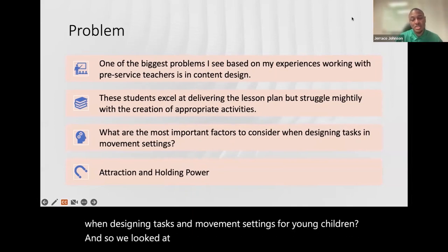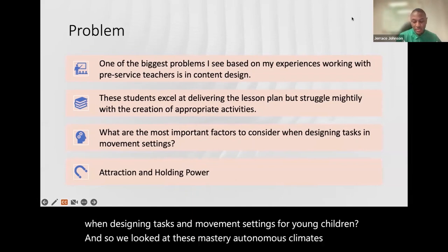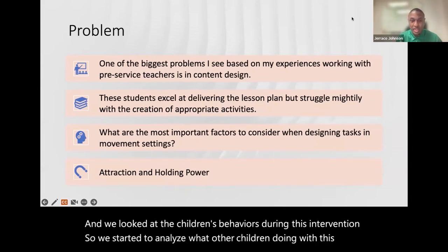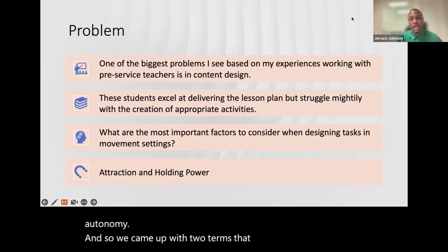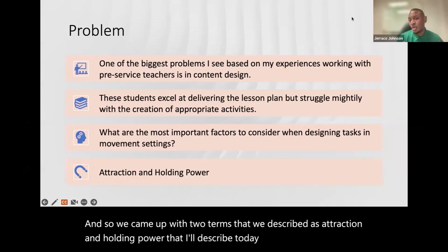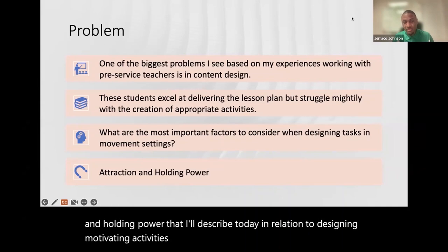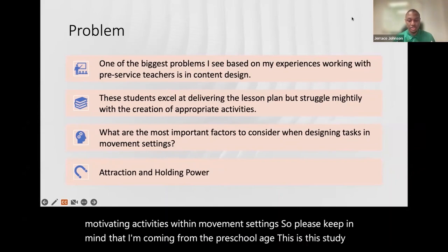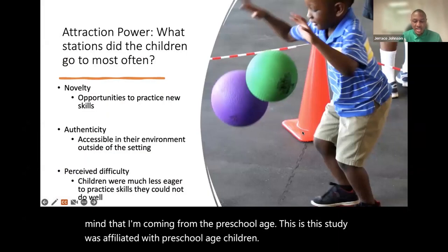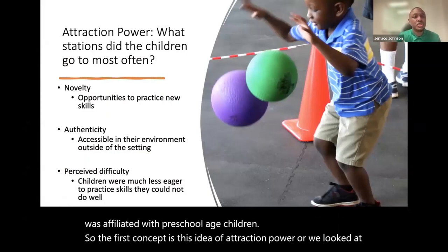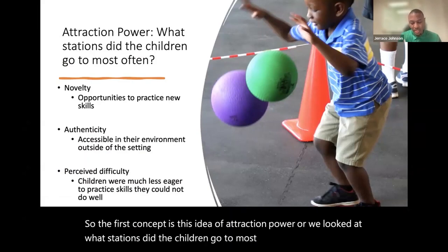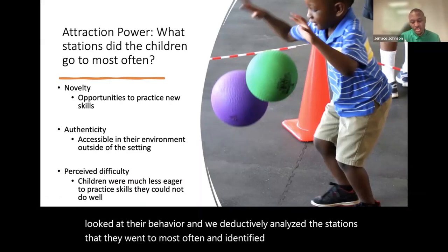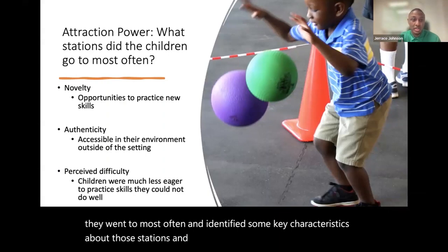We looked at mastery autonomous climate interventions and analyzed children's behaviors during these interventions — what are the children doing with this autonomy? We came up with two terms: attraction power and holding power. Keep in mind this study was with preschool-age children. The first concept is attraction power — we looked at which stations the children went to most often, and deductively analyzed and identified key characteristics about those stations. Three things emerged: novelty, authenticity, and perceived difficulty.